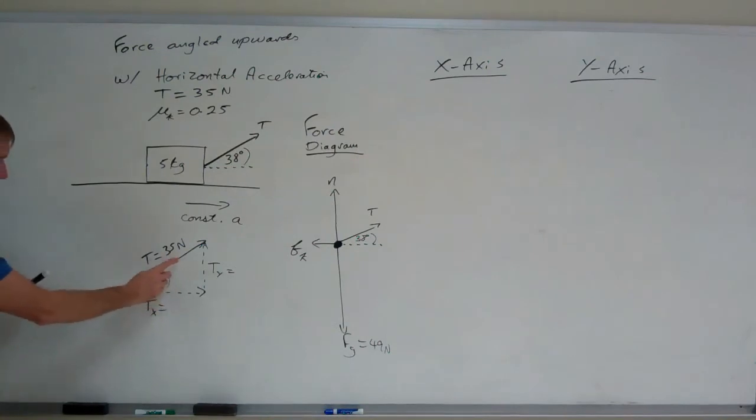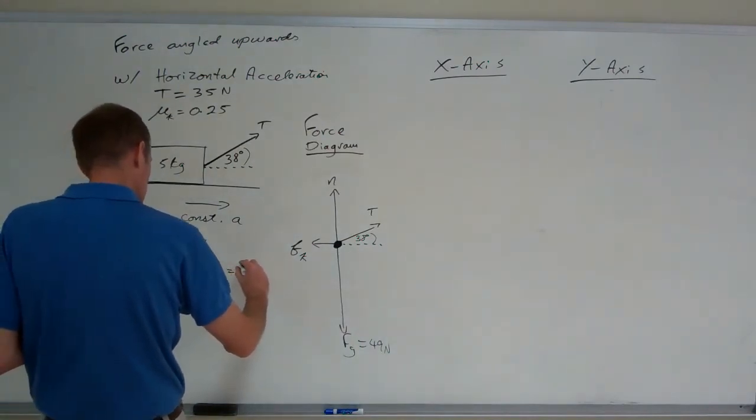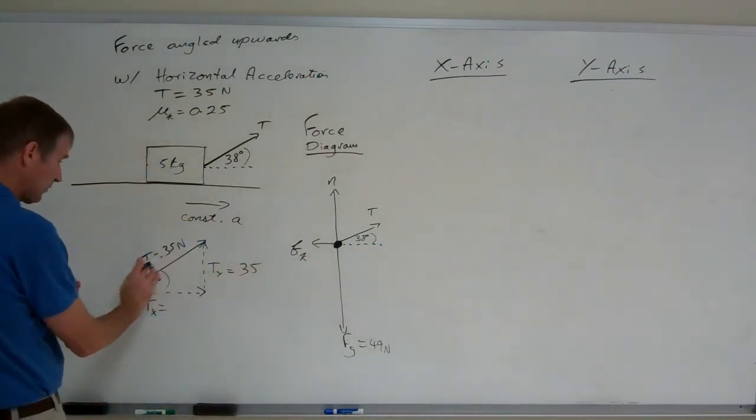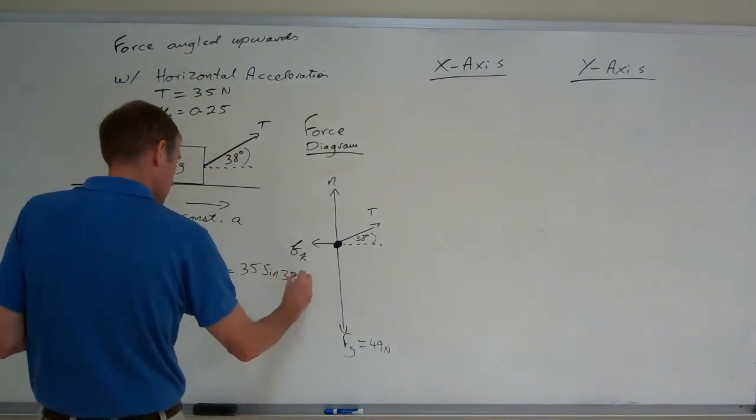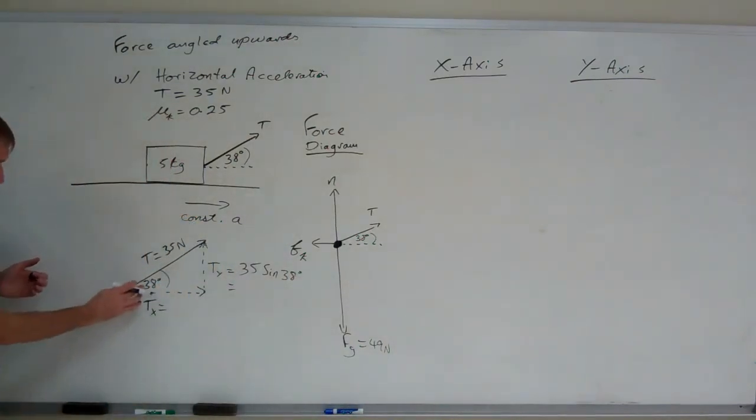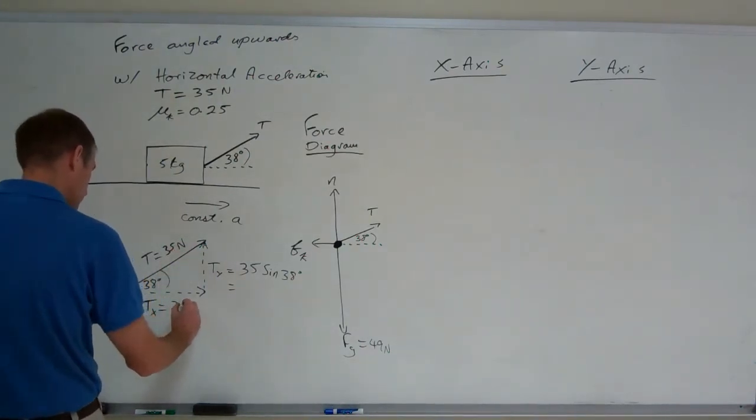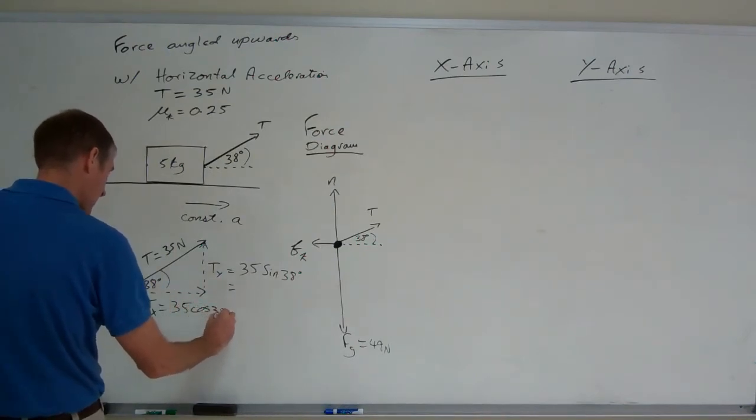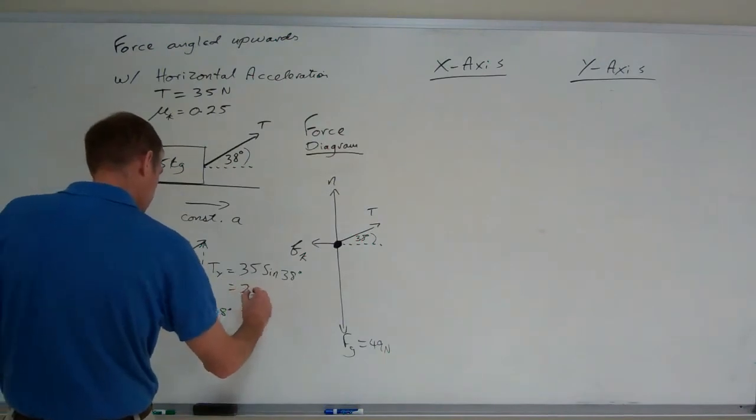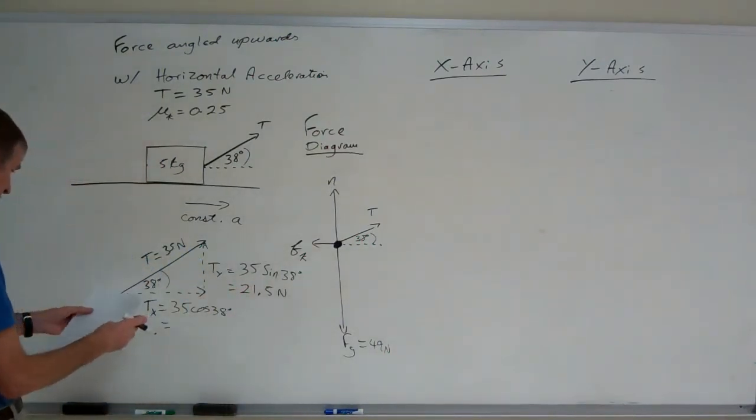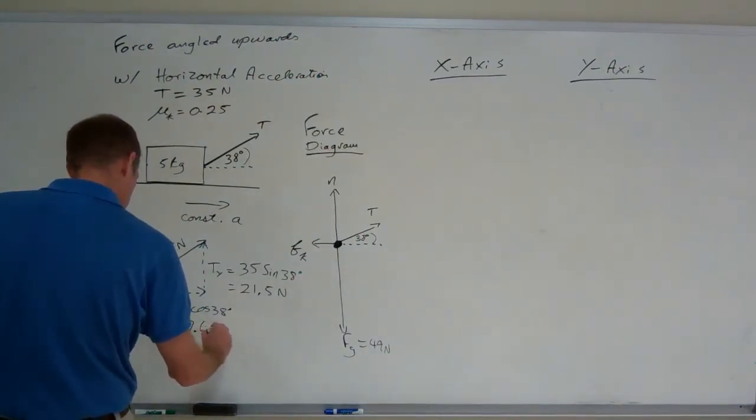Ty is going to be equal to 35 times the sine of the angle, right? T sine theta. 35, the hypotenuse, tension. Whatever your given tension is, times the sine of whatever that angle is. Tx is going to be, it's adjacent to the angle. So the cosine of 38 is the adjacent side divided by the hypotenuse, solve for the adjacent side, tx. That will be the tension, 35, the hypotenuse, times the cosine of 38 degrees. And I calculated these to be, let me see, 21.5 for ty and 27.6 for tx.